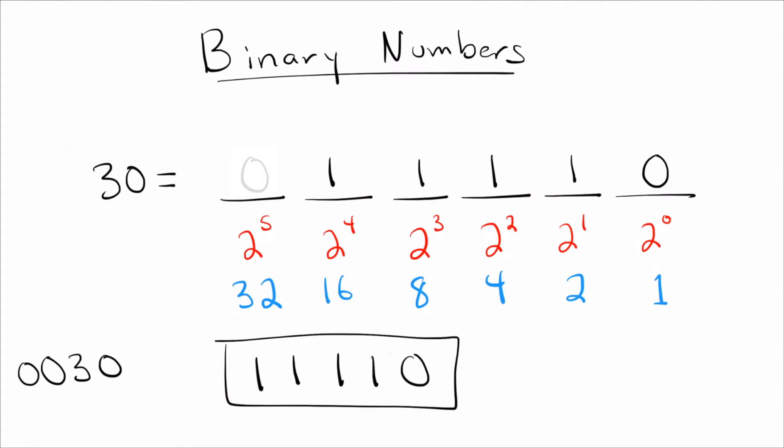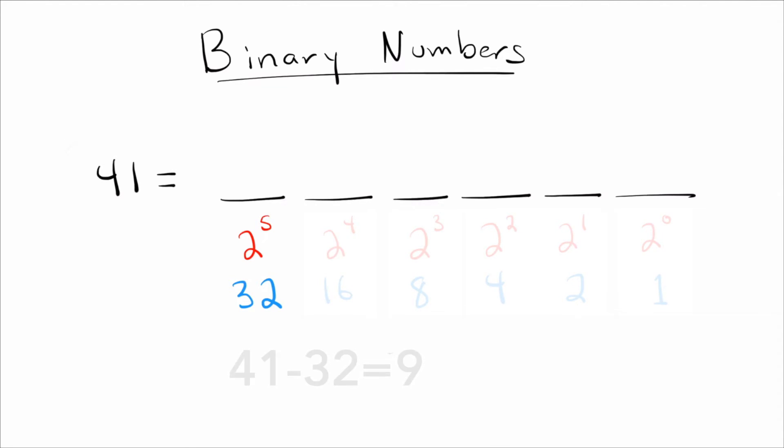Okay, so let's go ahead and try another example. Let's go ahead and do 41. Okay, same thing. So I take 41, there is a 32 and 41, there's one of them. So if I take 41, and I subtract off 32, that leaves me with nine.